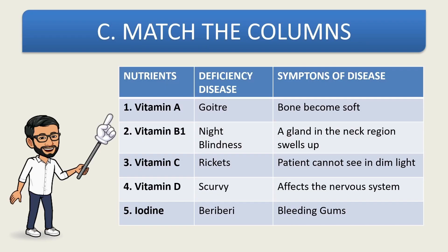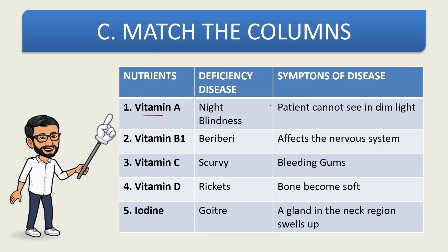Now let us match the columns. In one column we have nutrients, in another we have deficiency diseases, and a third column has symptoms. The deficiency disease caused by vitamin A is night blindness — the symptom is that the patient cannot see in dim light. For vitamin B1, the deficiency disease is beriberi and the symptom is that it affects the nervous system.